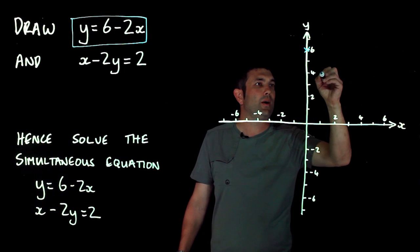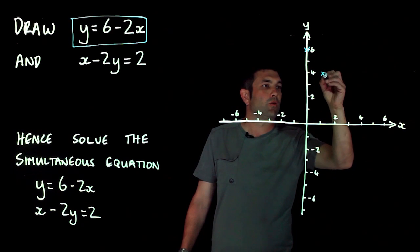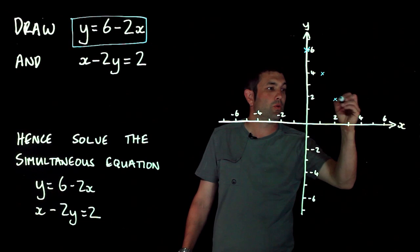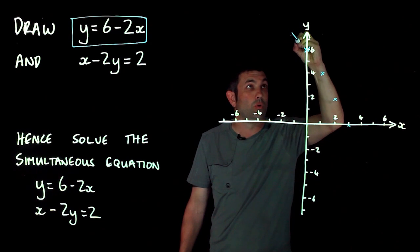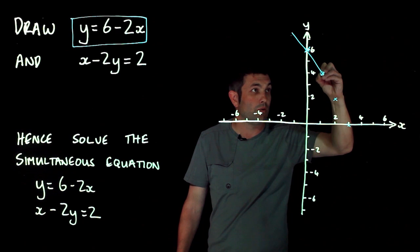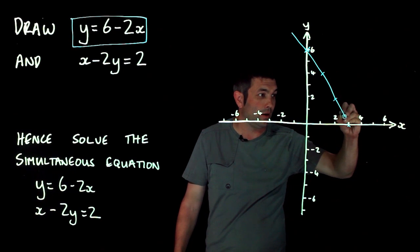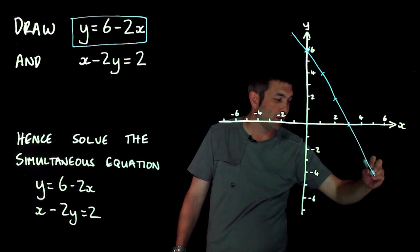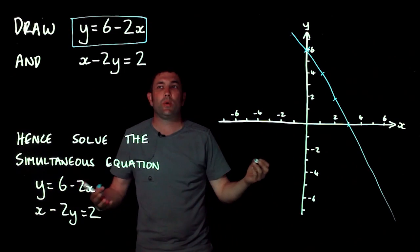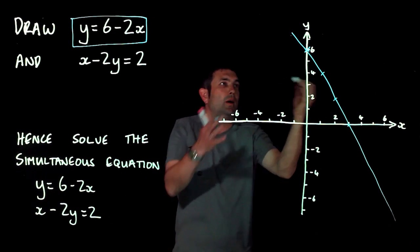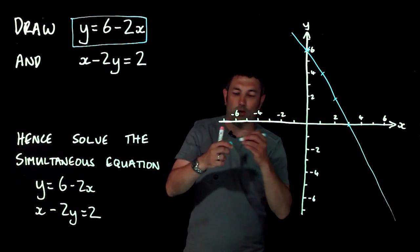The rise over the run, the gradient, is minus two. So when it goes across one it goes down two, and across one and down two, across one down two. And I'm going to draw that line in - you'd be using a ruler obviously. I've got to go as best I can. There we go.